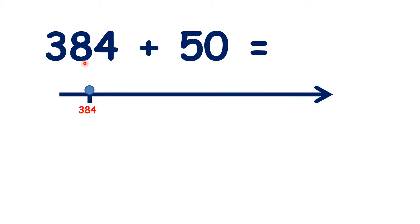But now it gets more difficult. We have 384, so we have eight tens. And we're adding 50, so that's five tens. Now, eight plus five is 13, but we can only have one digit in each place value column, so we can't do exactly the same thing as we did in our previous question.